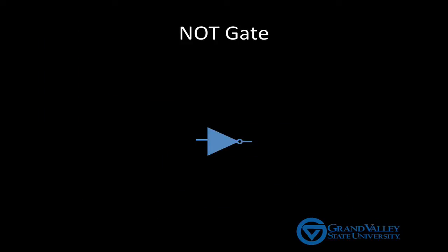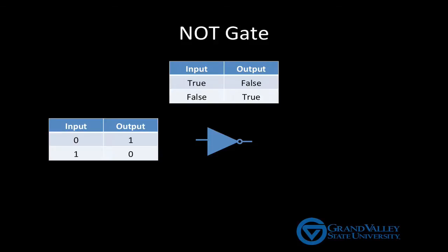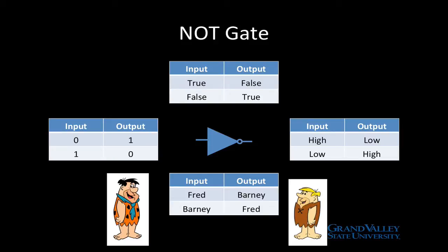Let's begin with the NOT gate. By definition, a NOT gate returns the opposite of its input. From a logical perspective, it doesn't matter what we call the input values. We can choose true and false, 0 and 1, high and low, Fred and Barney, or any other two names we like.